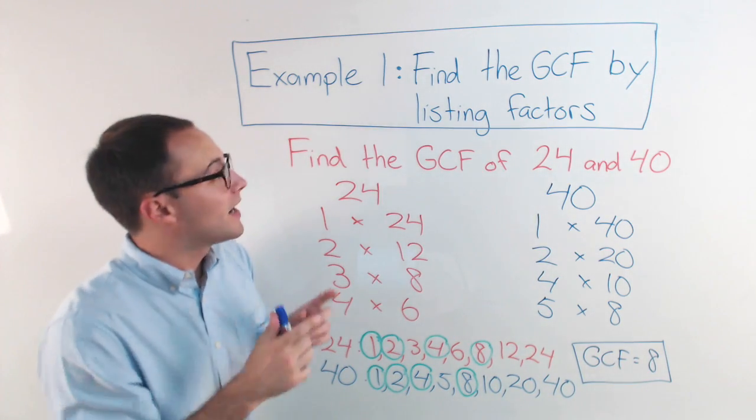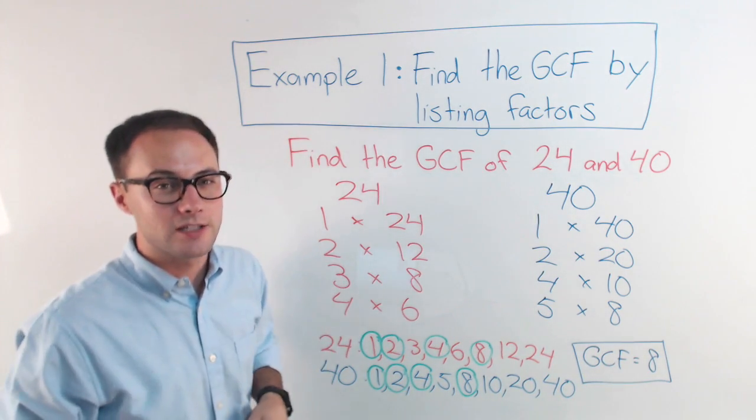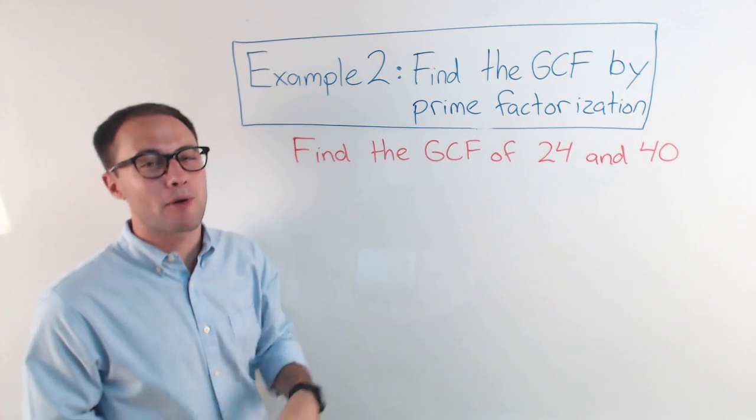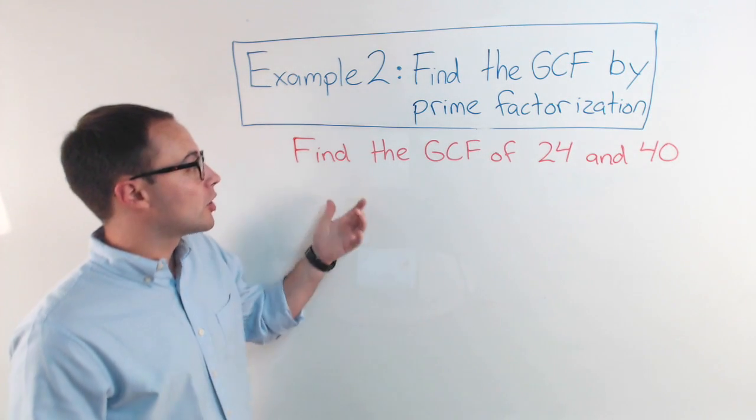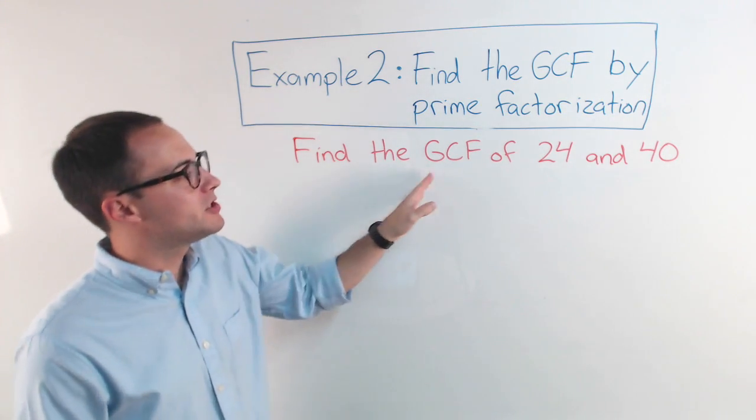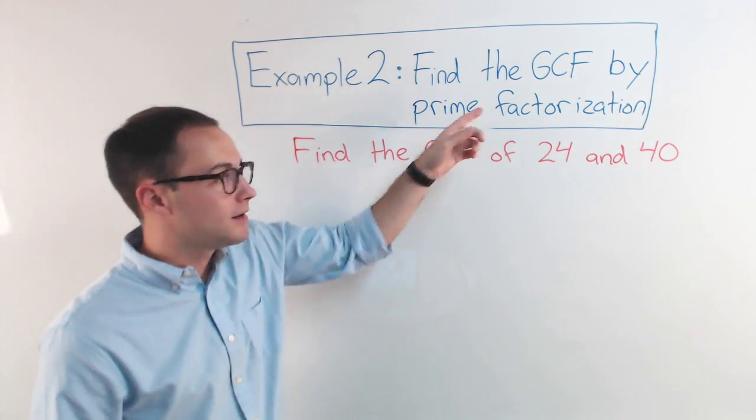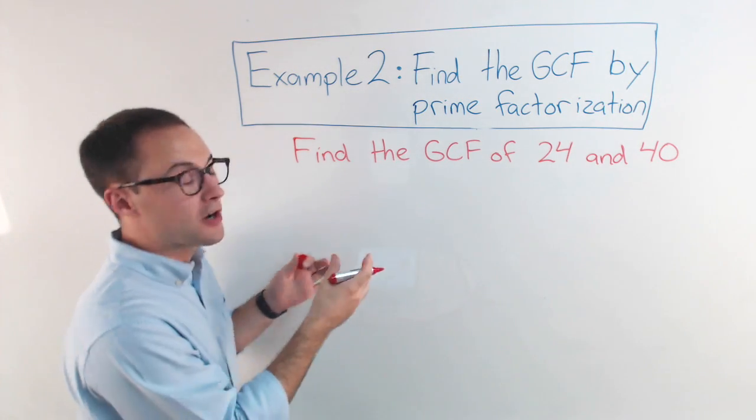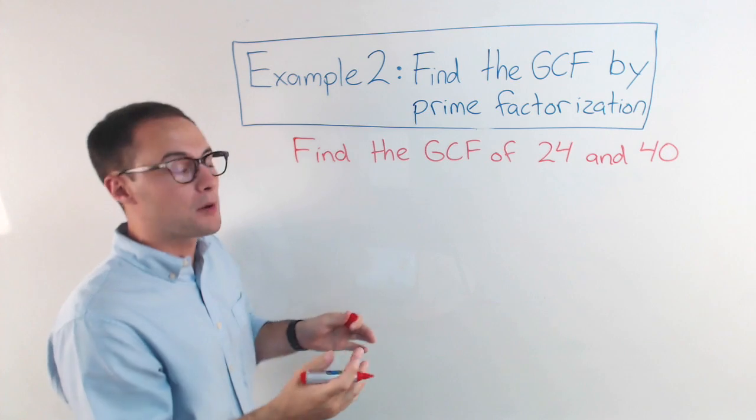Okay. Let's find the GCF using another strategy. For example 2, we're going to find the GCF by prime factorization. So we're going to do the same exact problem and just solve it a different way. Find the GCF of 24 and 40. We're going to use prime factorization. So first, I'm going to use a factor tree and figure out what the prime factorization is of both numbers.